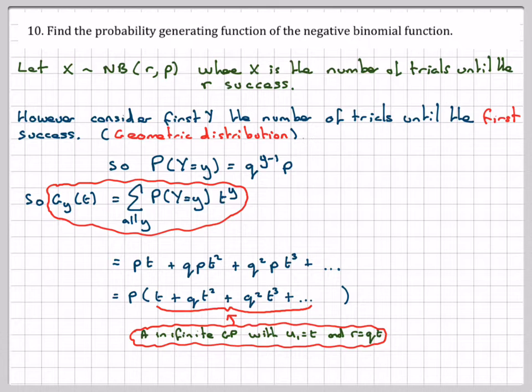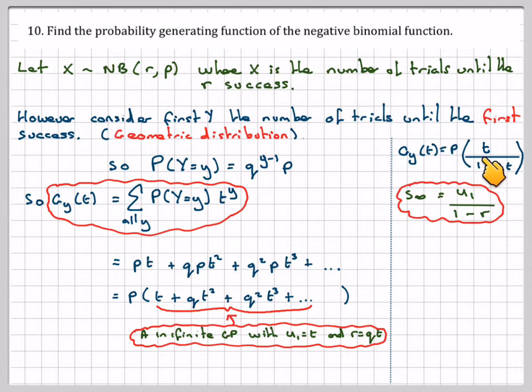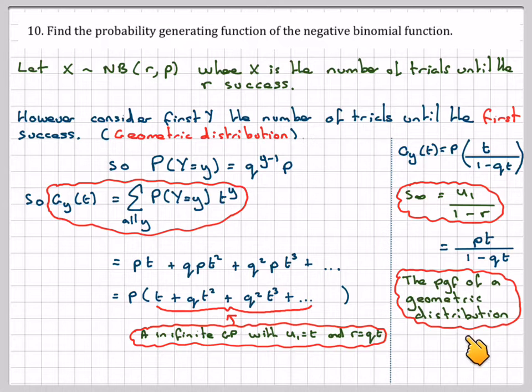So G_Y(t) will be p times the sum of a geometric progression, which is t over 1 minus qt. The sum to infinity is u_1 over 1 minus r, and that's what we've applied here, taking the first term which is t, and done 1 minus the common ratio which is qt. That's going to equal pt over 1 minus qt. So what we've basically proven there is the probability generating function of a geometric distribution.